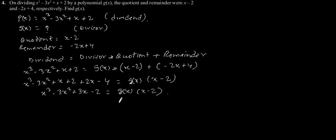From here we can say that we will get g of x as a quotient if we divide x³ minus 3x² plus 3x minus 2 by x minus 2. So let's divide this polynomial by x minus 2.